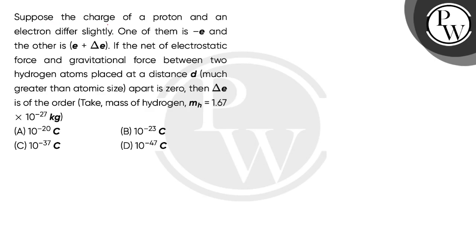Let's read the question. Suppose the charge of a proton and an electron differs slightly. One of them is minus E and the other is E plus del E. If the net of electrostatic force and gravitational force between two hydrogen atoms placed at a distance d apart is zero, then del E is of the order. Take mass of hydrogen as 1.67 multiplied by 10 to the power minus 27 kg.